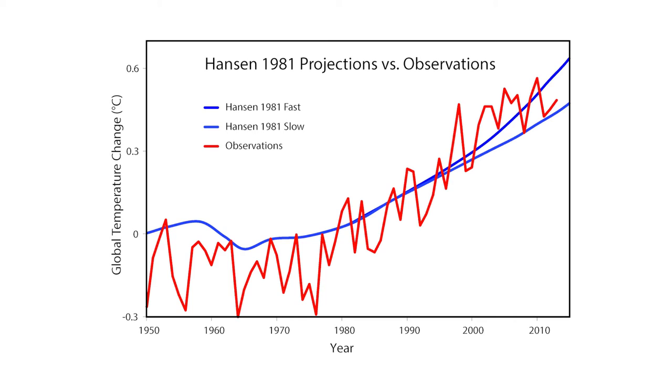In actuality, the planet warmed about 0.6 degrees Celsius during that time, so Hansen's model was remarkably close with that projection.